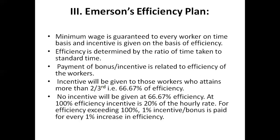The question is: how much incentive is given? If a worker is performing at two-thirds of the standard time, they will be given 20% on the hourly rates. If their efficiency exceeds 100%, they will be rewarded more — 1% of bonus is paid for every 1% increase in efficiency above 100%.